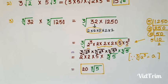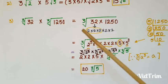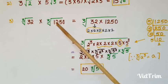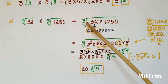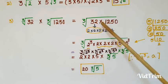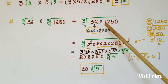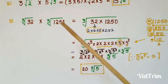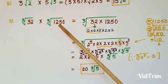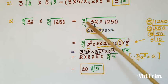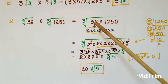The next example is ∛32 × ∛1250. This equals ∛(32 × 1250), because ∛a × ∛b = ∛(ab).